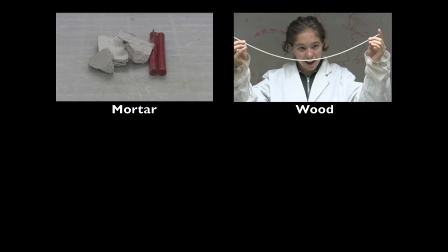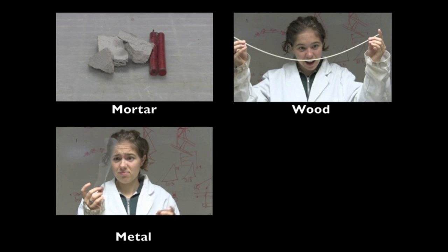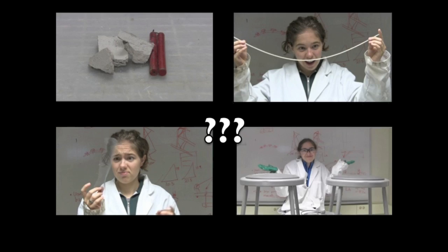Now you can see the mortar, wood, and the window screen all respond differently when being pulled. The mortar cracks and breaks, the wood bends and bounces back, and the metal bends and keeps its new shape. But why do they behave differently?